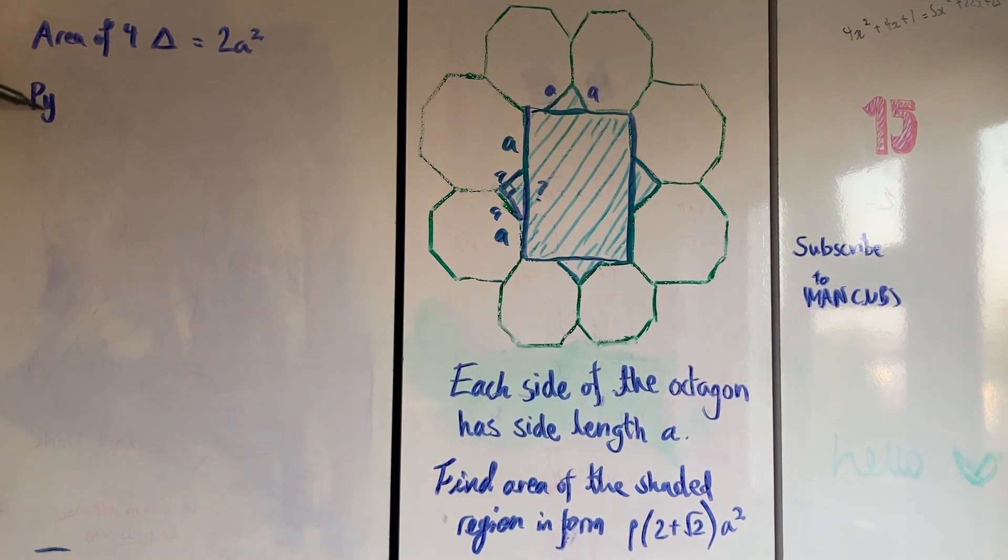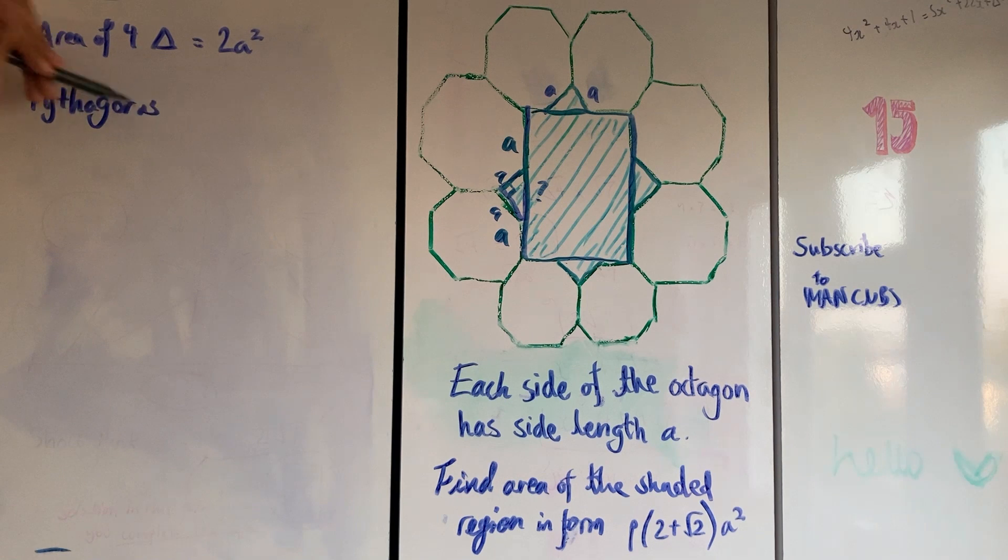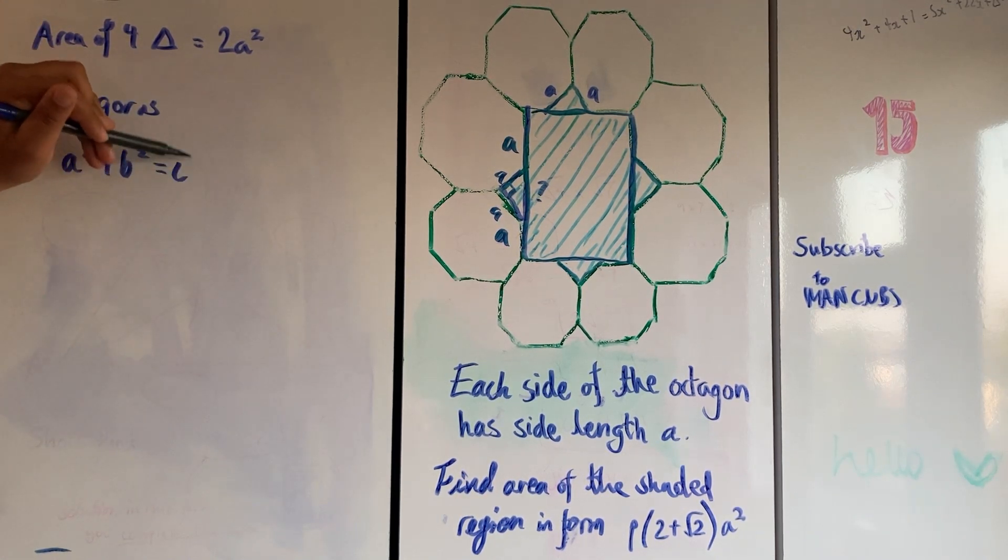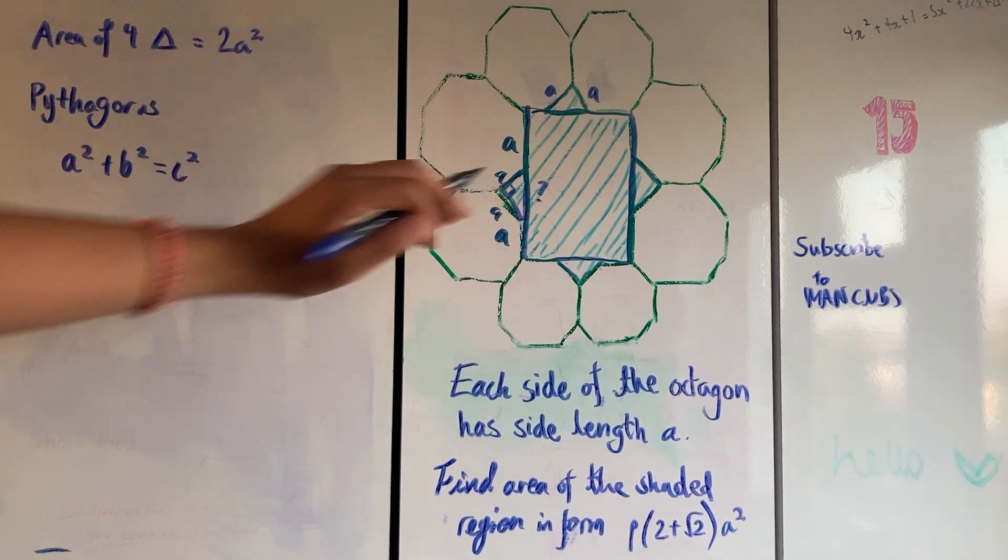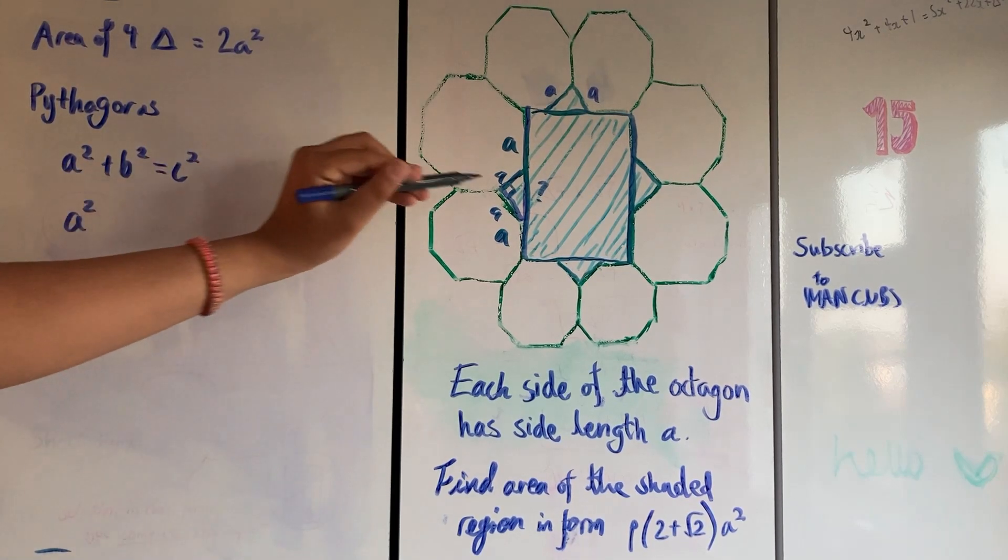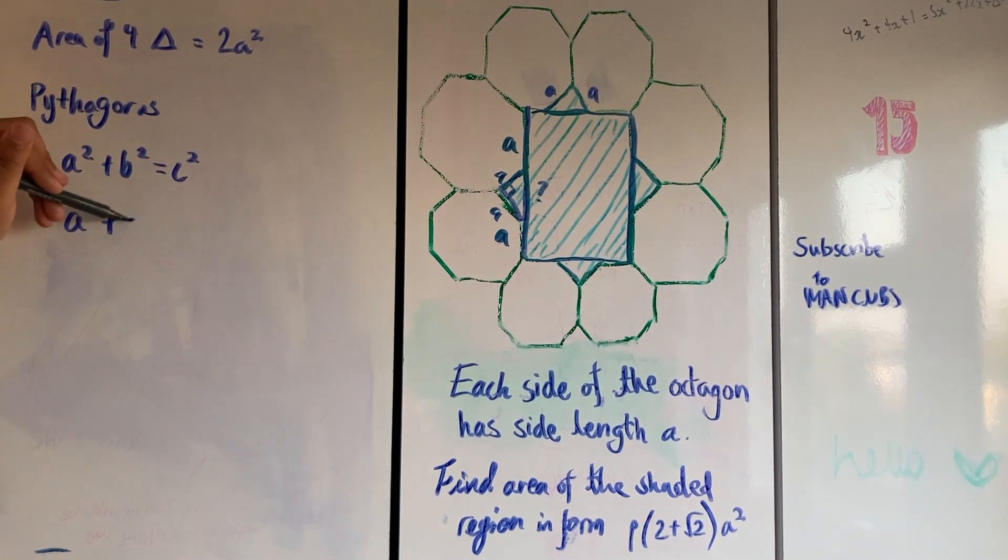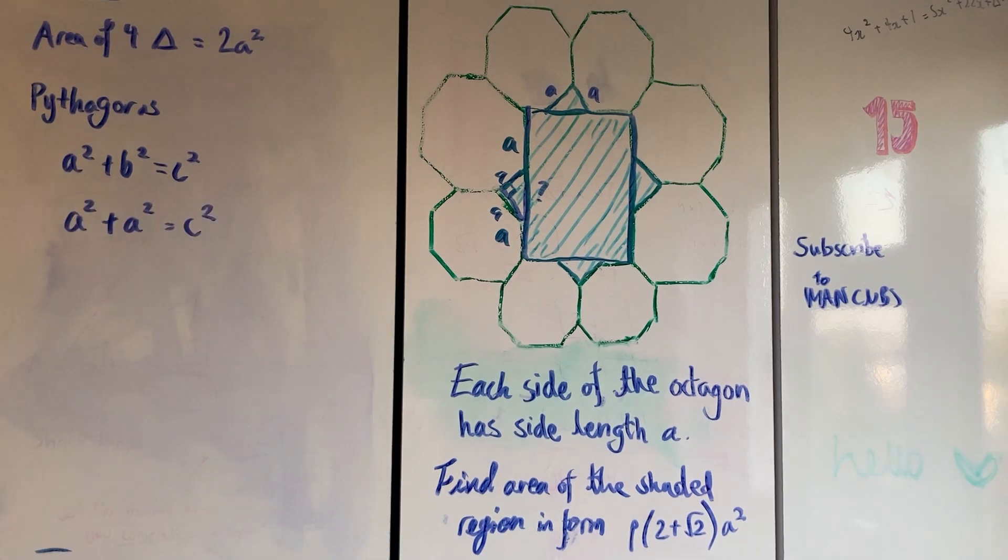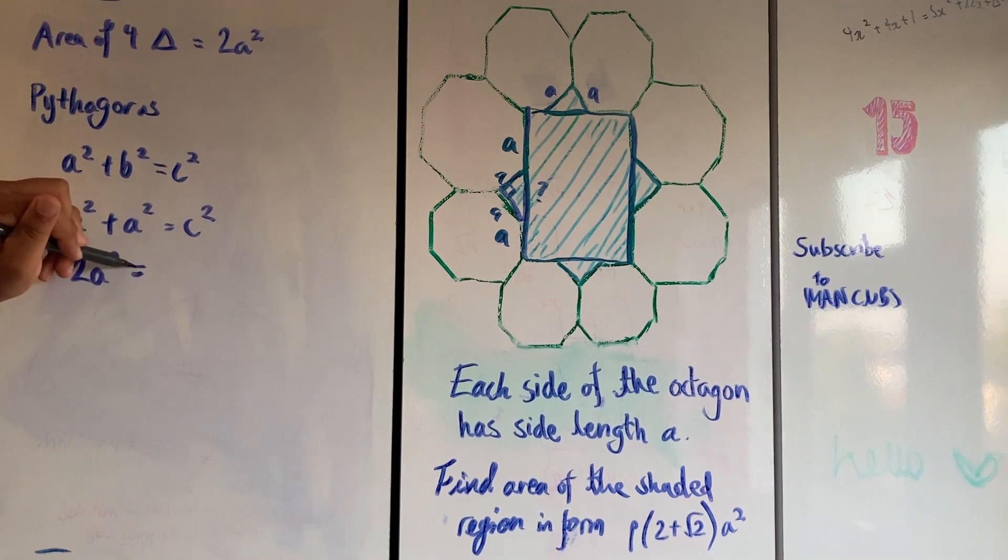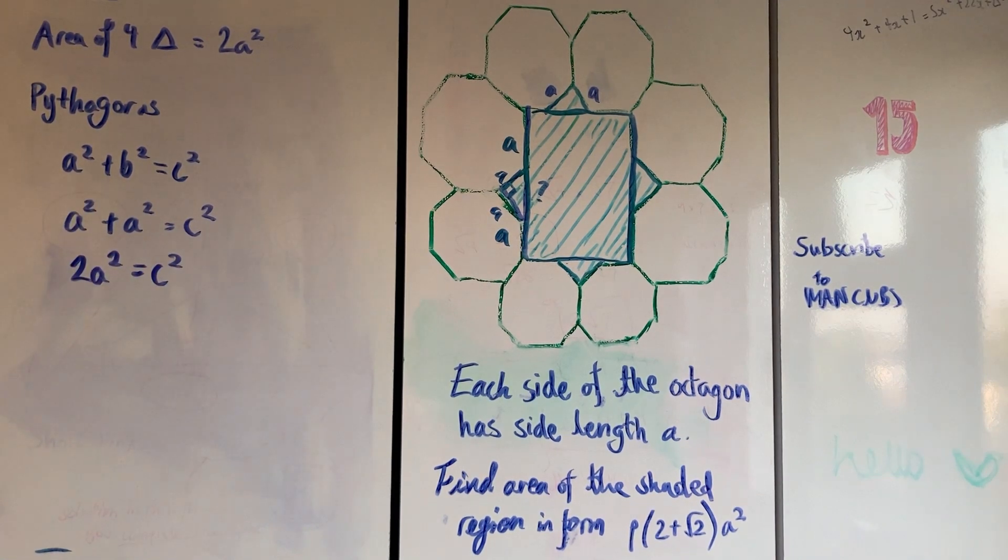Right angle triangle, two lengths we know to find out the hypotenuse - Pythagoras. We're going to need to use Pythagoras here. A squared plus B squared equals C squared. What's our A squared value? A squared. What's our B squared value? A squared. So a² + a² must equal c². Let's simplify this. A² + a² is just 2a². So 2a² = c². To get just c, not c squared, we need to square root all of it.